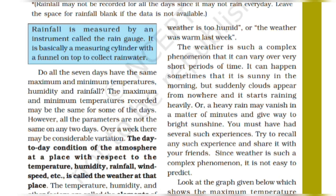Jho day-to-day condition of the atmosphere at that place, we call it the weather at that place. Jhan peh bohat garmi hai, humidity bohat jyadha hai, rainfall nahin hai, aur speed of wind slow hai — we call it a place like Rajasthan.